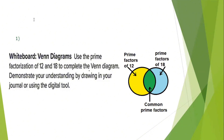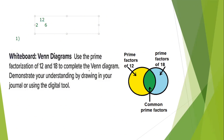First, let's write the prime factors of 12. How can I get 12? I can get it by 2 times 6 or 3 times 4. I'll try 2 times 6. 2 is a prime number but 6 is a composite number. How can I get 6? By multiplying 2 by 3. So 2, 2, and 3 are prime factors of 12.